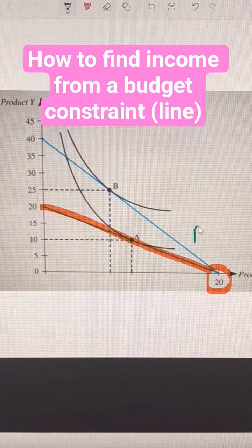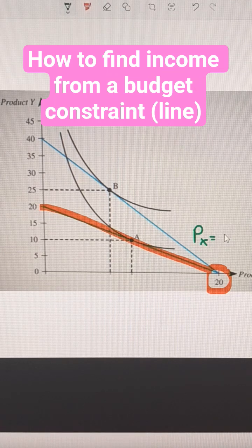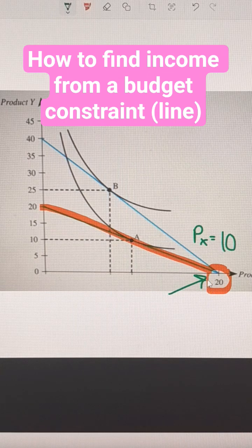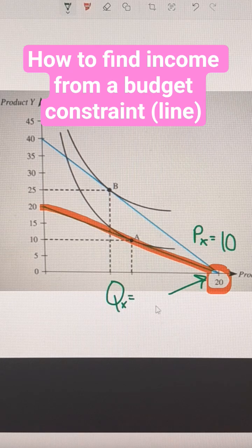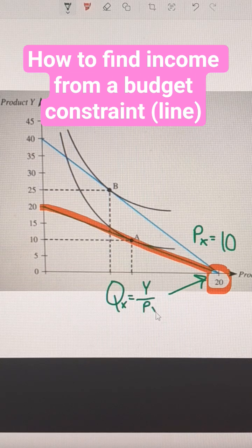The consumer is able to buy 20 units of product X, and we are told that the price of product X is 10. The formula to derive the answer is that the quantity of X equals income, often written as Y, over the price of X: Qx = Y/Px.